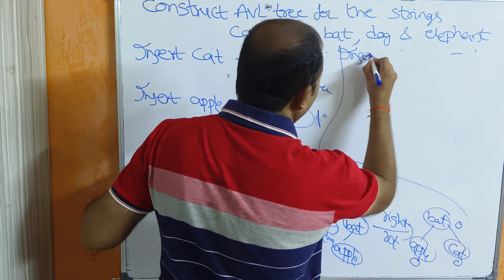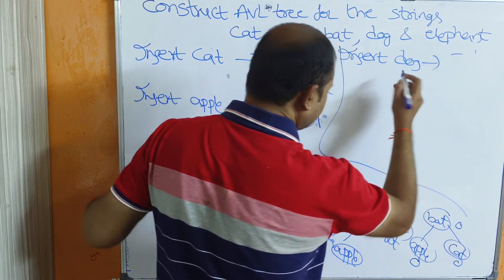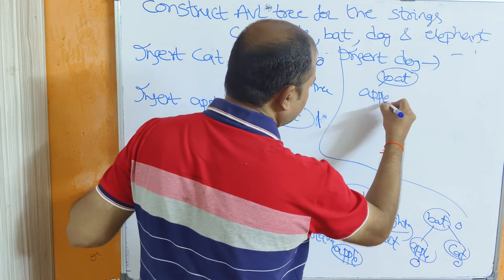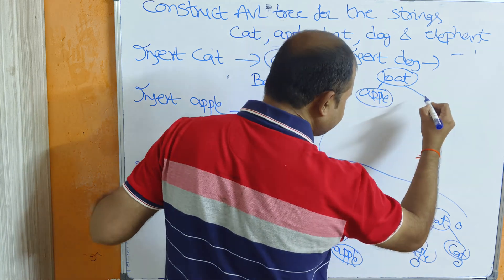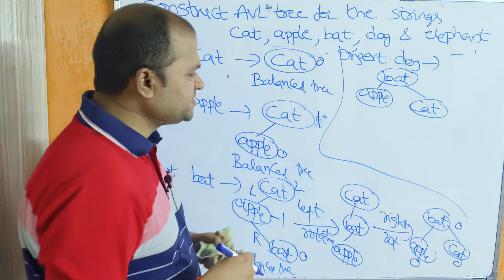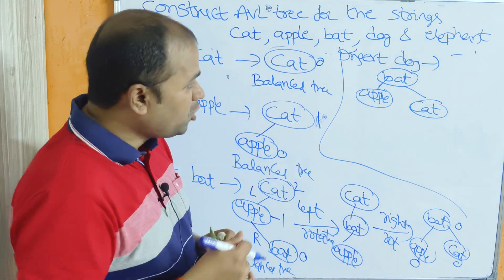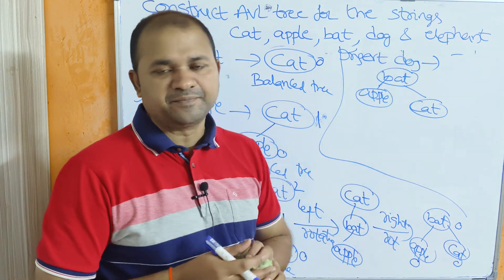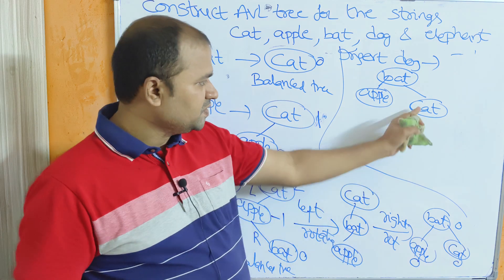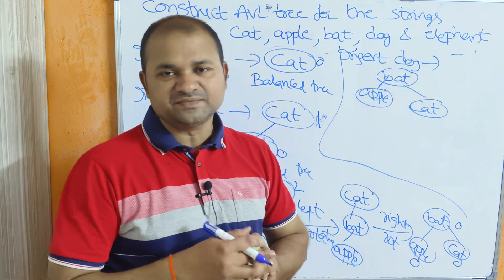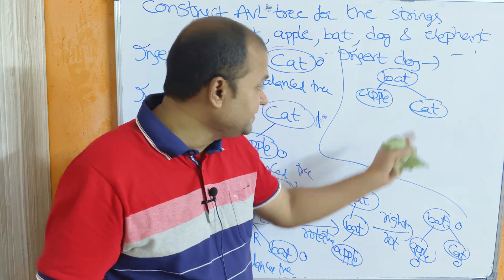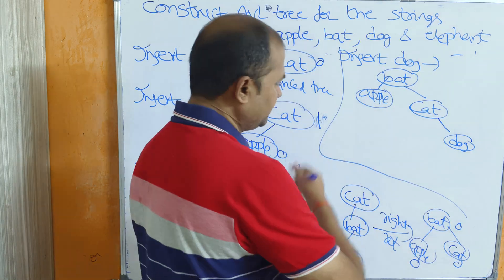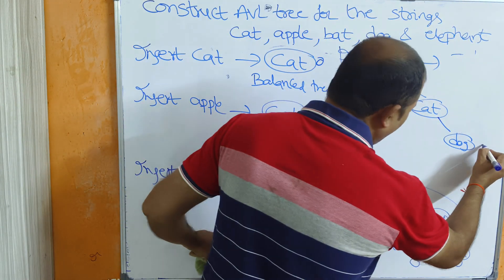Next, insert 'dog'. The previous tree has bat as root, with apple as left child and cat as right child. Compare 'd' with 'b' — d is greater, go right. Compare 'd' with 'c' — d is greater, so dog becomes the right child of cat. The balance factor for dog is 0.